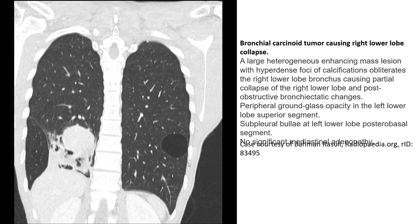This is a case of bronchial carcinoid tumor causing right upper lobe collapse and right lower lobe collapse, as can be seen in the image.